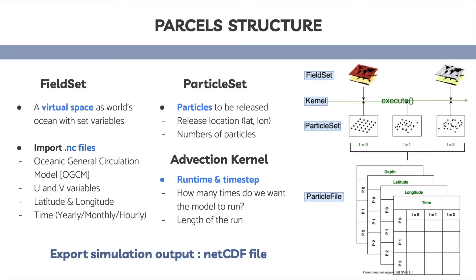Moving on to the structure, there are FieldSet, ParticleSet, and the advection kernel. The FieldSet, the first one you'd create, is basically a virtual space representing the ocean. It includes a set of location, time, and variables of the ocean area you're interested in. All these listed variables would be included in the .nc file.